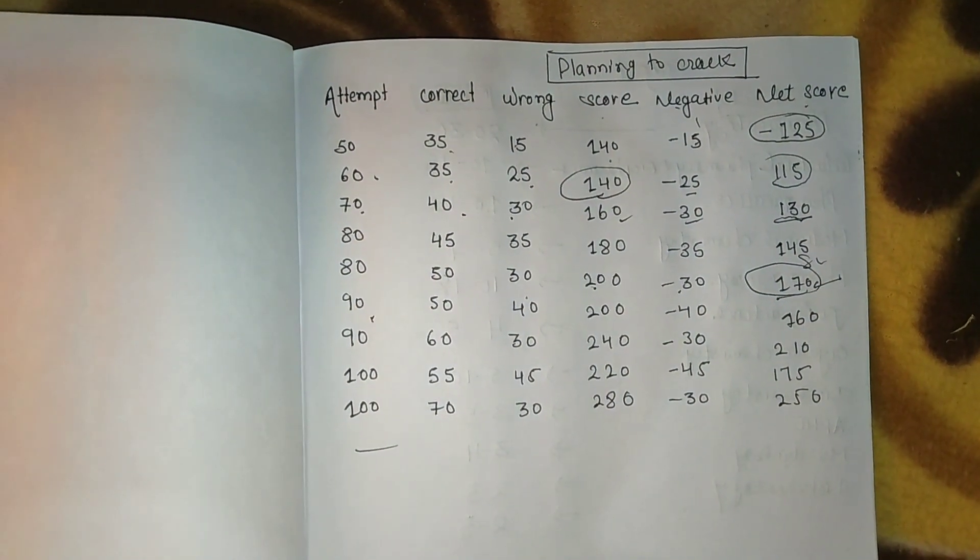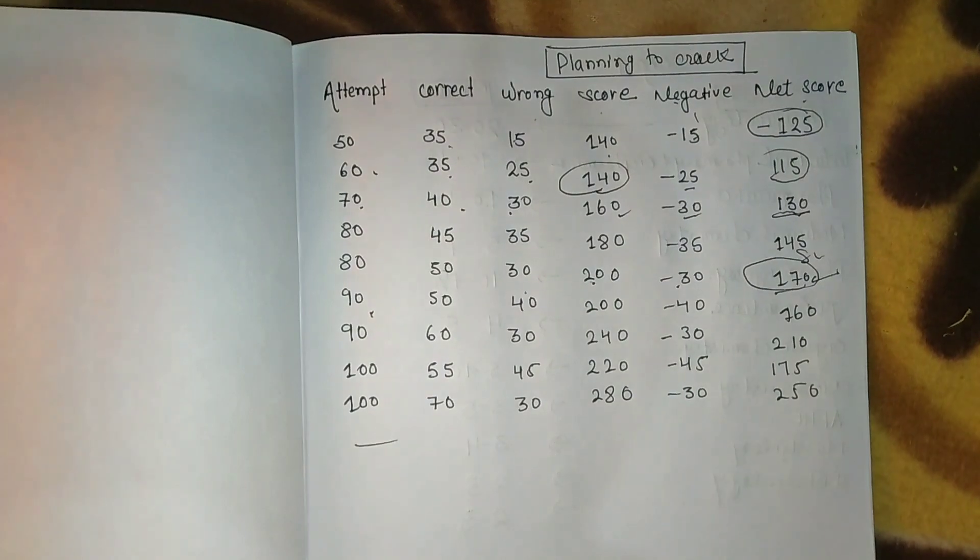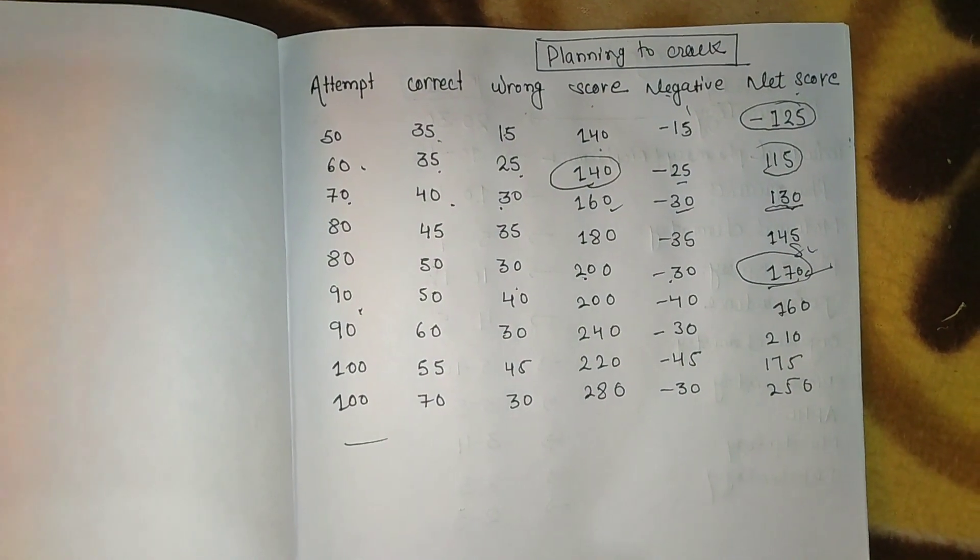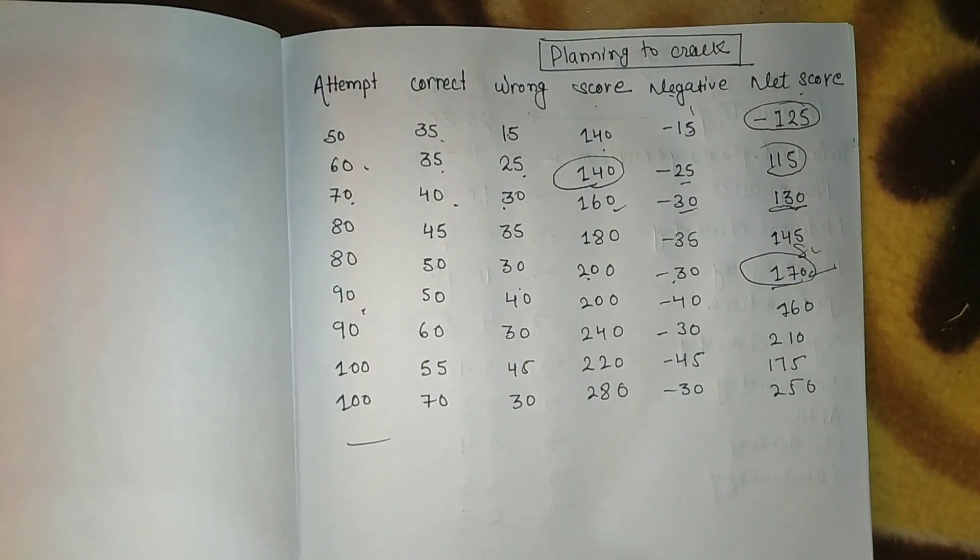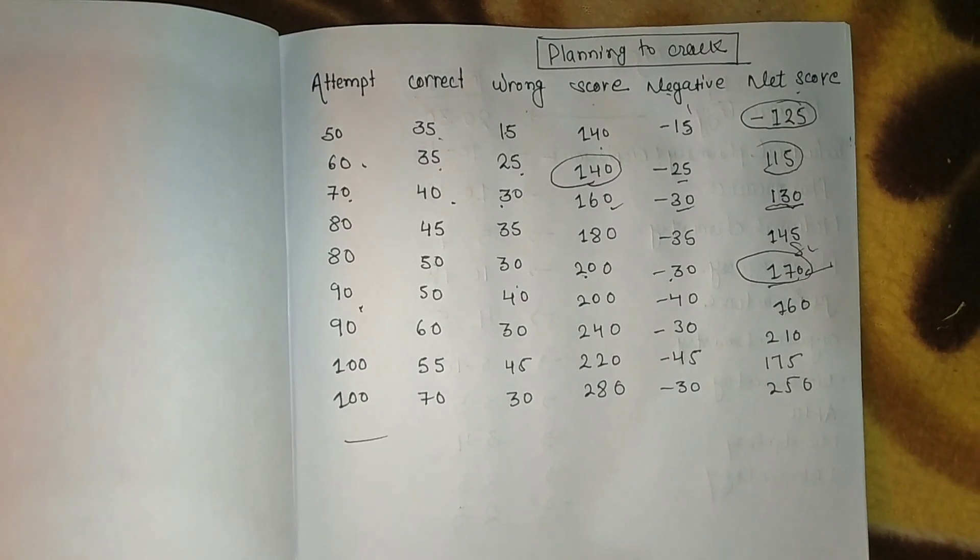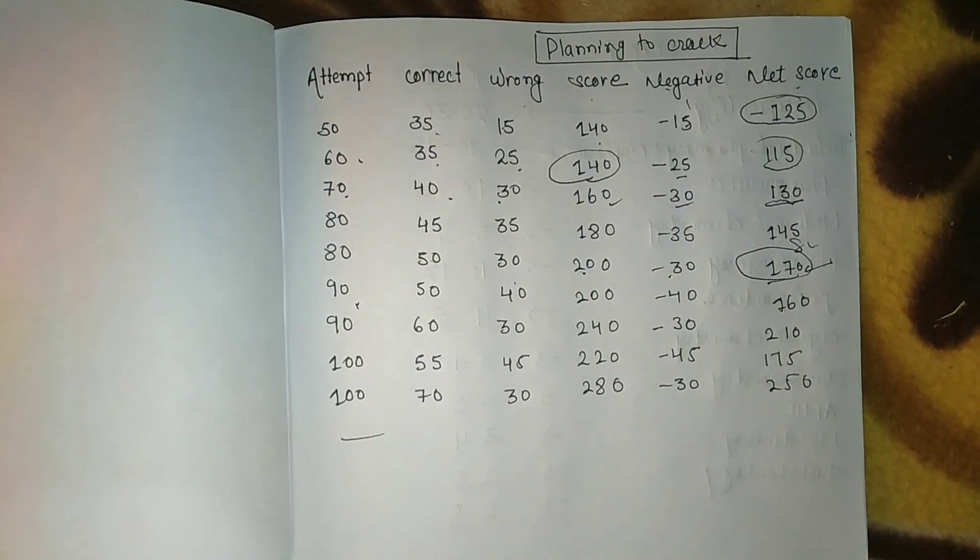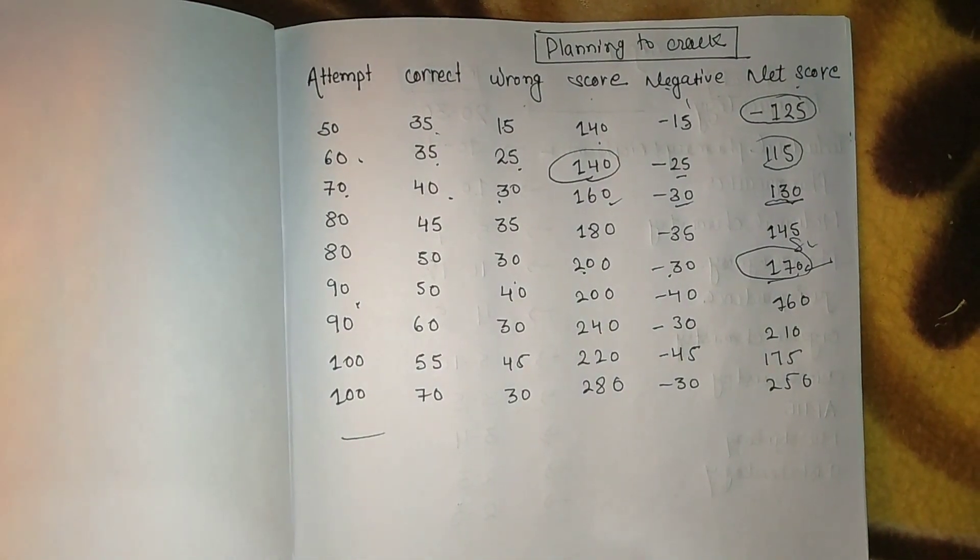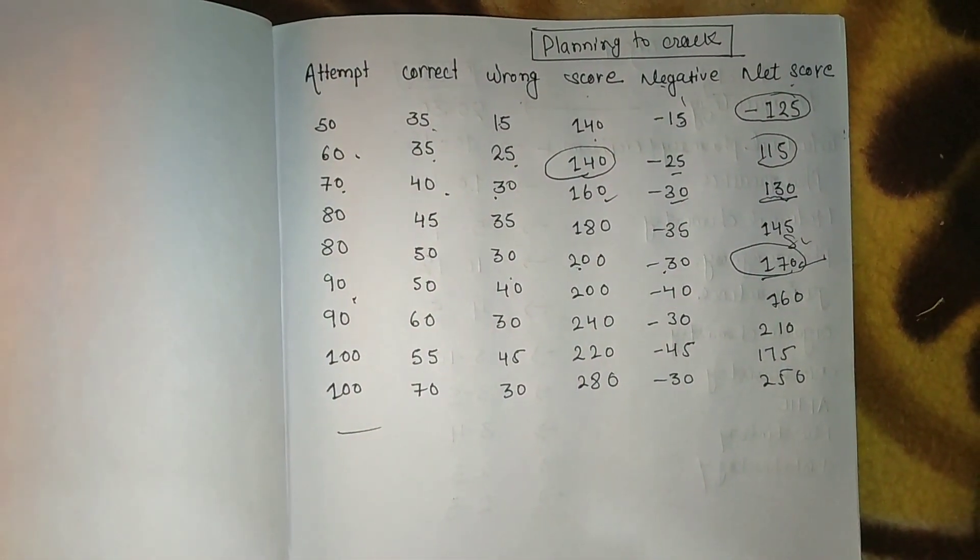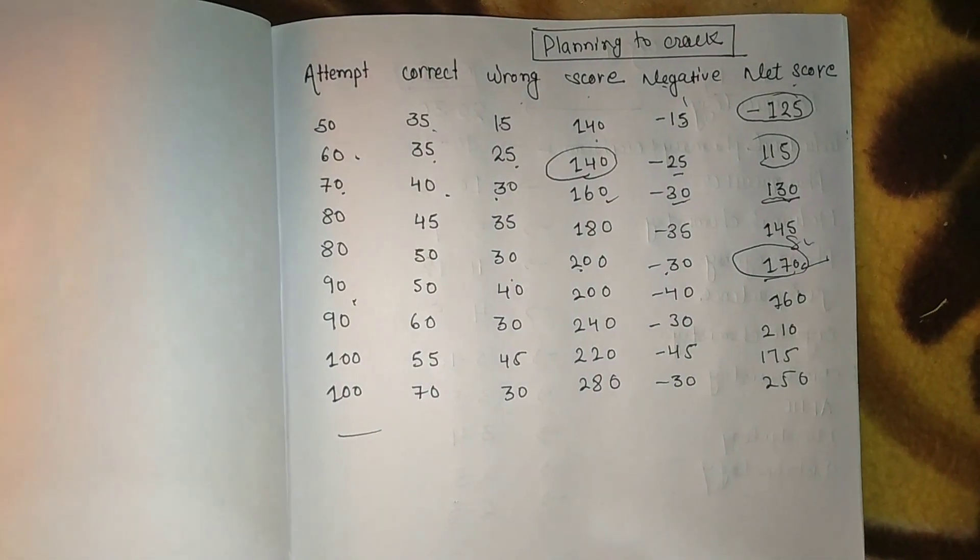If you attempt 90, 60 correct and 30 wrong, your score is 240 minus 30 negative, then you have a net score of 210. It is a very good ranking score. If you aim for top 100, you will definitely be included.